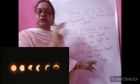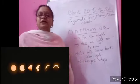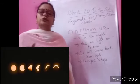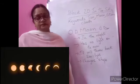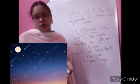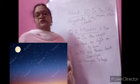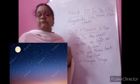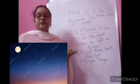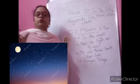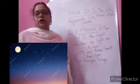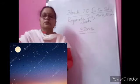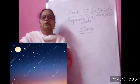The moon changes shape because it has no light of its own. Whichever part of the moon is getting sunlight, that part only we are able to see. So the moon appears to change shape because it is going round the Earth and the Earth is going round the sun. Compared to the sun, the moon is smaller. Sun is very big and moon is smaller.